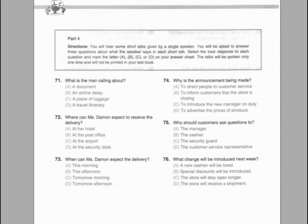Part 4. Directions: You will hear some short talks given by a single speaker. You will be asked to answer three questions about what the speaker says in each short talk. Select the best response to each question and mark the letter A, B, C, or D on your answer sheet. The talks will be spoken only one time and will not be printed in your test book.